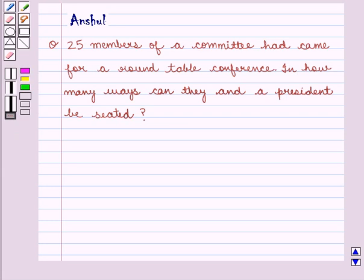Let's understand the question. If there are 25 members in a committee who are to be seated around a circular table along with the president, we have to find the number of ways for this arrangement.